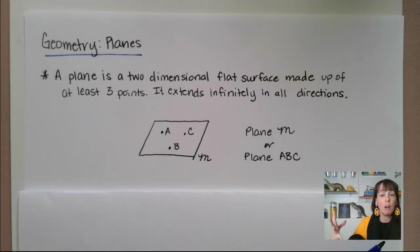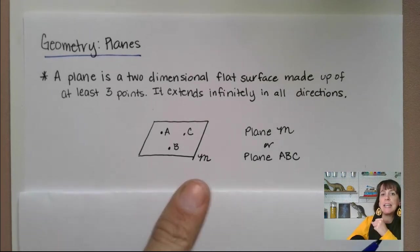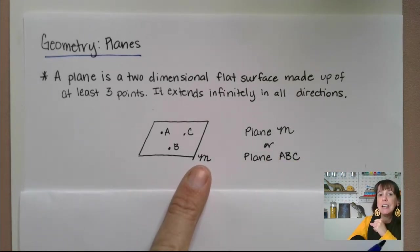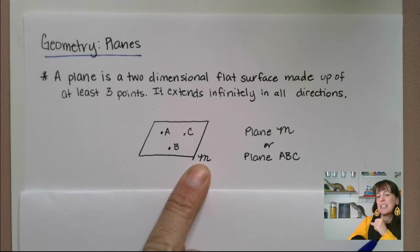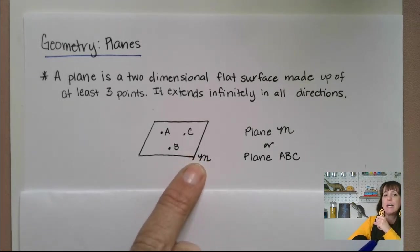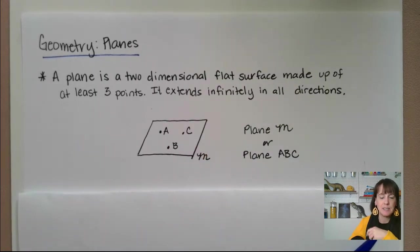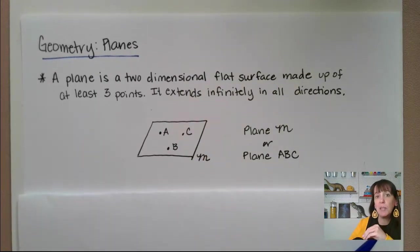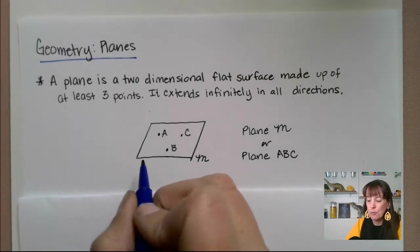So the way that we talk about planes is you can name them by either using the scripted letter that's usually in the lower corner on the plane or next to it and say plane M in this case. Or you can name the plane by naming at least three points that are on the plane.